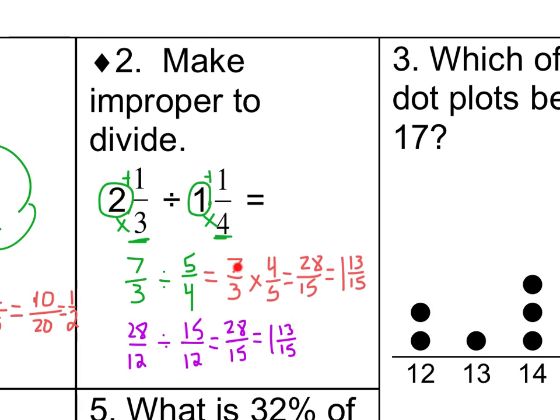Over here, I did keep, change, flip, and we kept 7 thirds. We are multiplying by the reciprocal of 5 fourths, and we get 28 fifteenths, which is 1 and 13 fifteenths. So no matter what, our answer is 1 and 13 fifteenths.